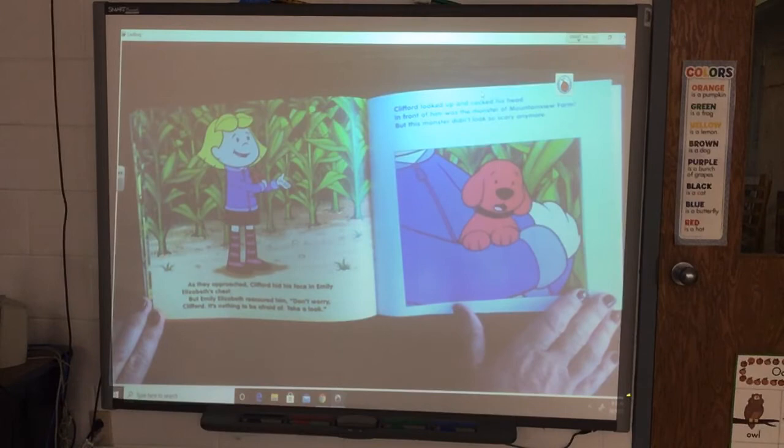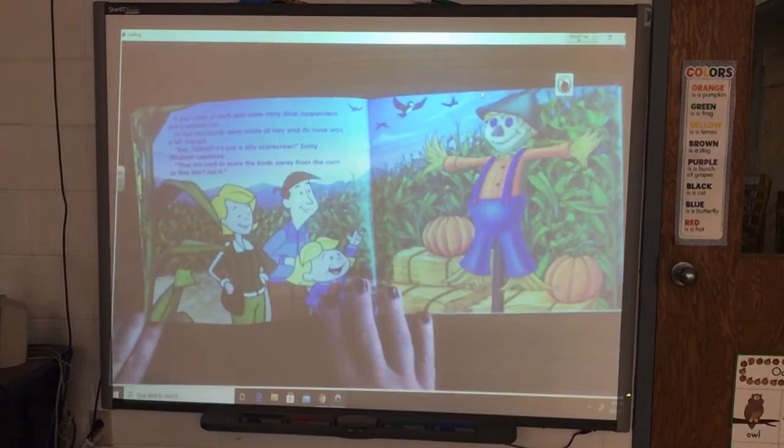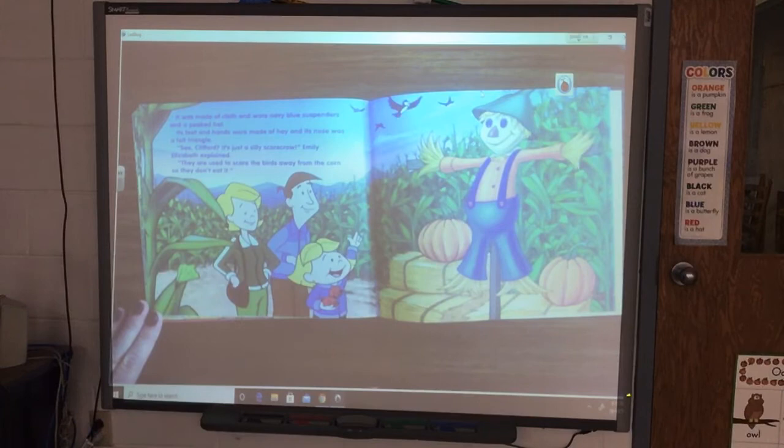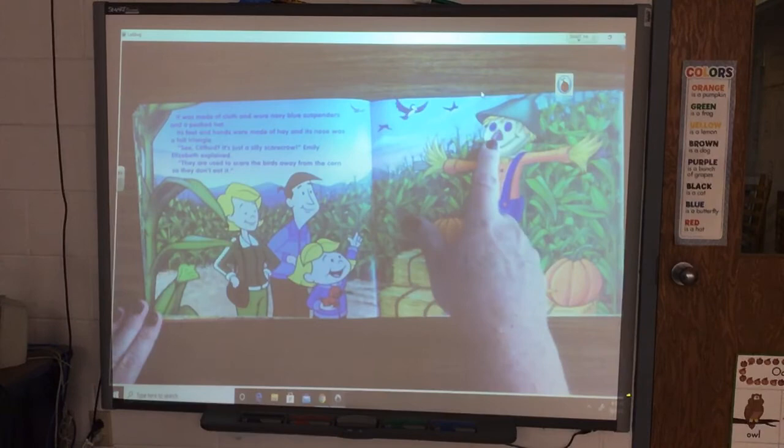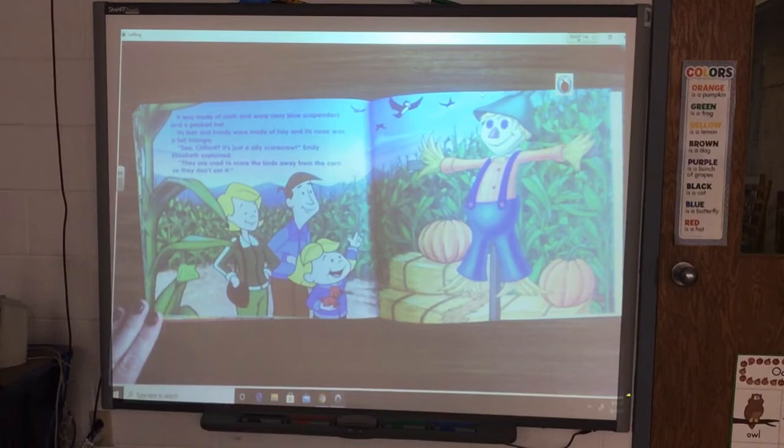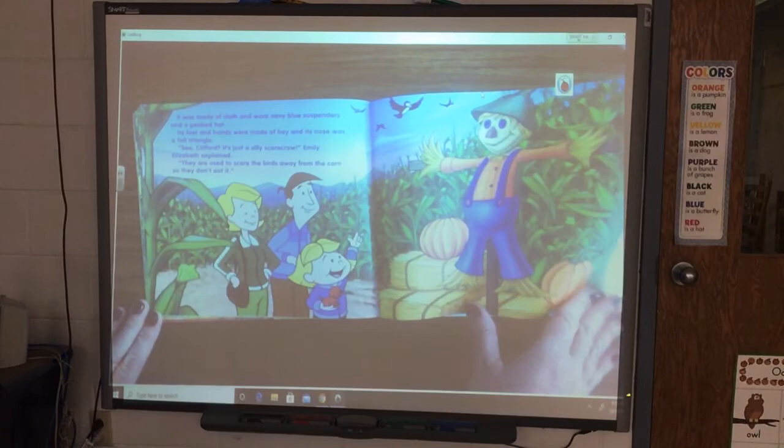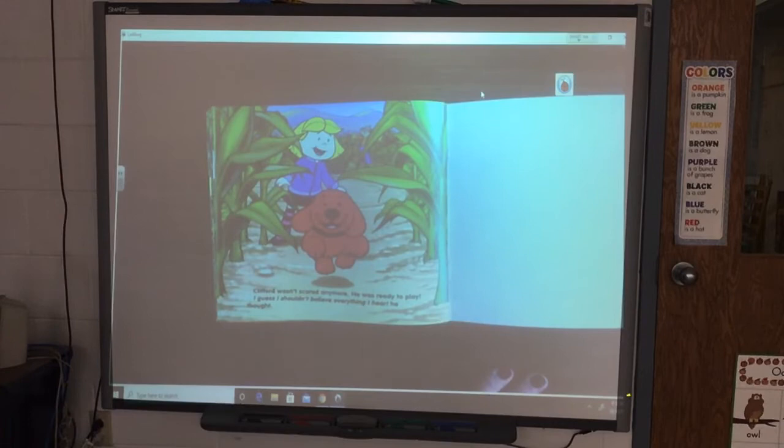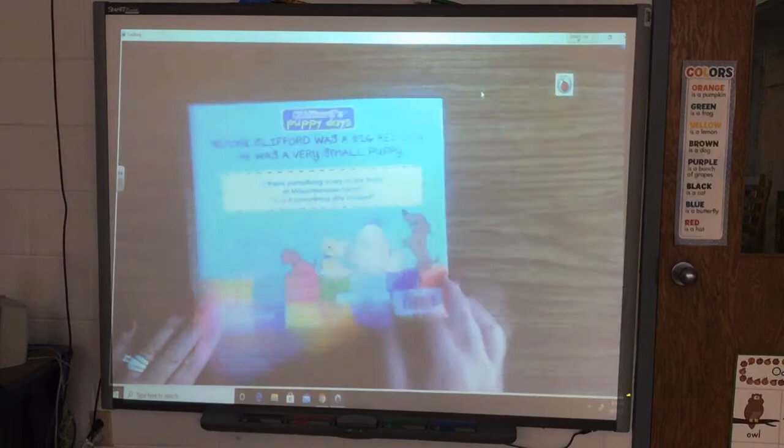Clifford looked up and cocked his head. In front of him was the monster of Mountain View Farm. But this monster didn't look so scary anymore. It was made of cloth and wore navy blue suspenders and a pink hat. Its feet and hands were made of hay. And its nose was a felt triangle. See Clifford? It's just a silly scarecrow. Emily Elizabeth explained. They are used to scare the birds away from the corn so they don't eat it. Clifford wasn't scared anymore. He was ready to play. I guess I shouldn't believe everything I hear, he thought.